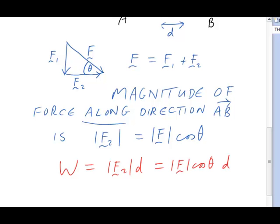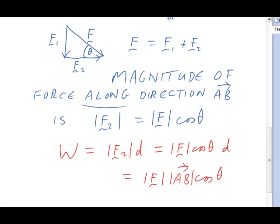Finally, to give a full vector picture, if we think of the line segment from A to B as being the vector AB, then d is just its magnitude. So for the work, we end up with the expression W equals magnitude of F times magnitude of AB times cos of the angle between the directions of F and AB.